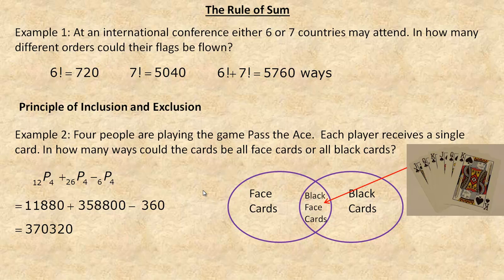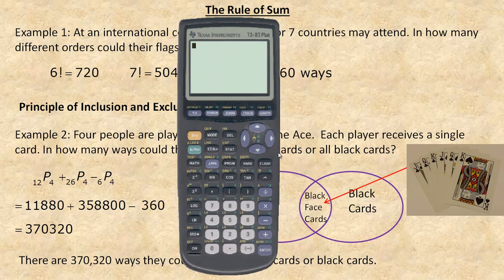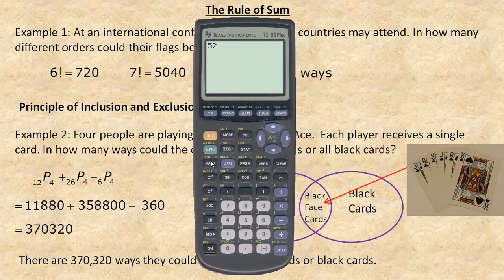That's the number of ways the cards could be all face cards or all black cards. It might sound like a lot, but it's really not. If you think of the entire deck of 52 cards, there are actually almost six and a half million ways to take four of them. So 370,000 is actually a relatively small number in comparison.